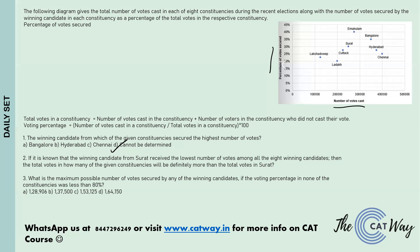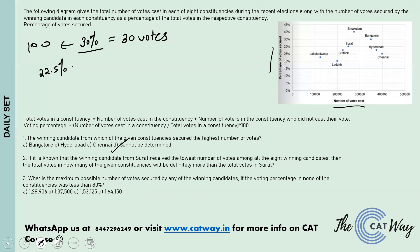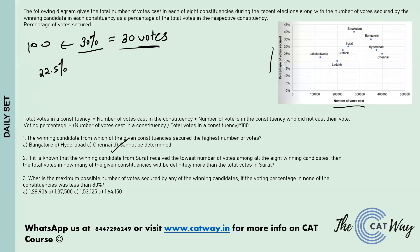Surat's winning candidate got 30% of the votes. Let's say there were 100 people in Surat, so he got 30 votes. Lakshadweep's winning candidate got 22.5% of votes. If total votes in Lakshadweep were 100 or less, then 22.5% would be less than 30 votes. So for 22.5% to be greater than 30 votes in absolute terms, the total number of voters in Lakshadweep must definitely be greater than 100.